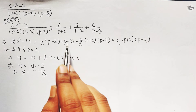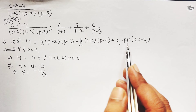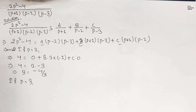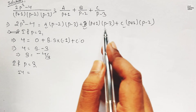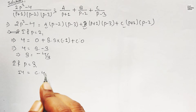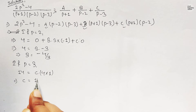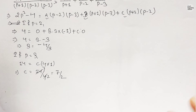To find C, we take p = 3. On the LHS: 2(3²) - 4 = 18 - 4 = 14. The C term gives C(3 + 1)(3 - 2) = C(4)(1) = 4C. Therefore 14 = 4C, giving C = 7/2.